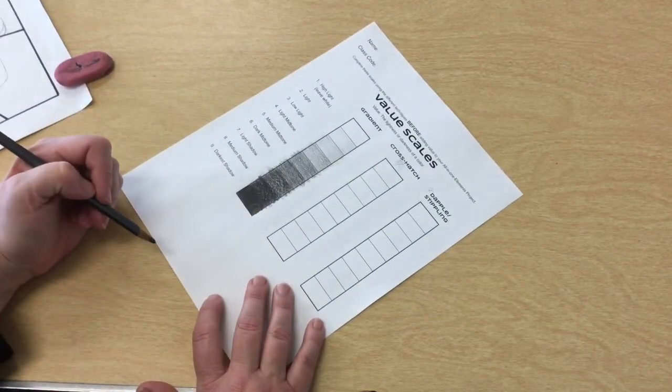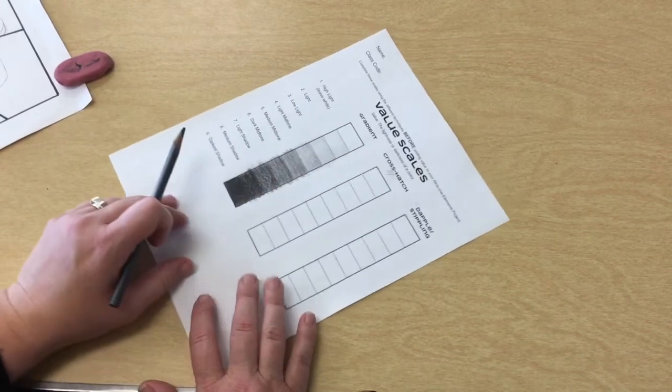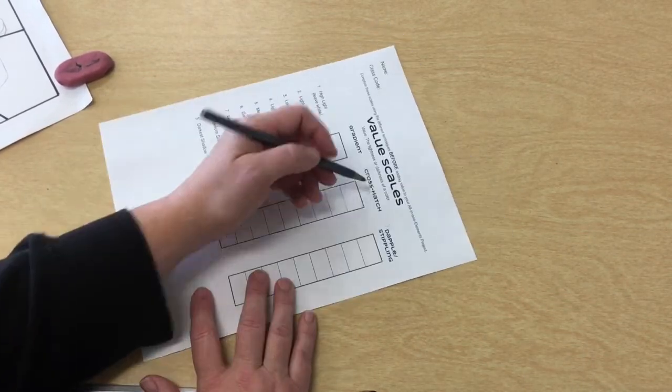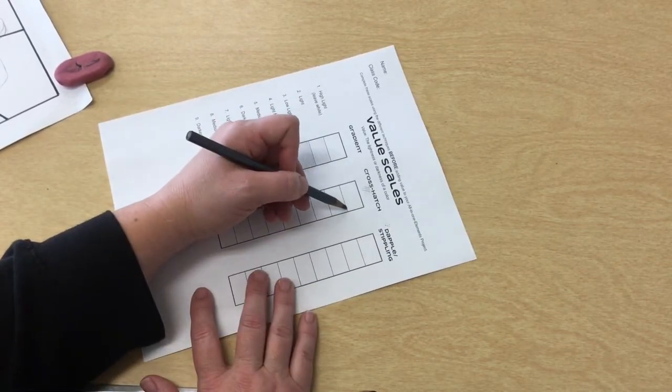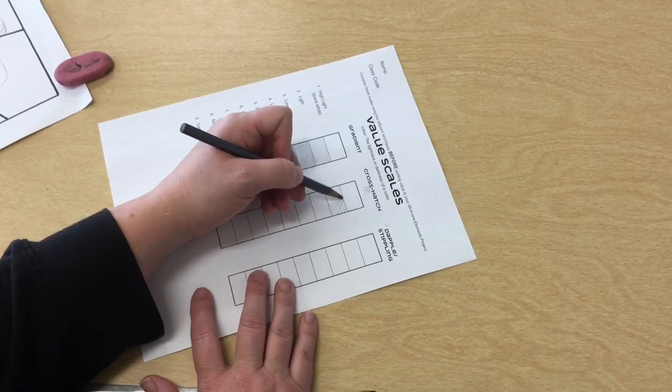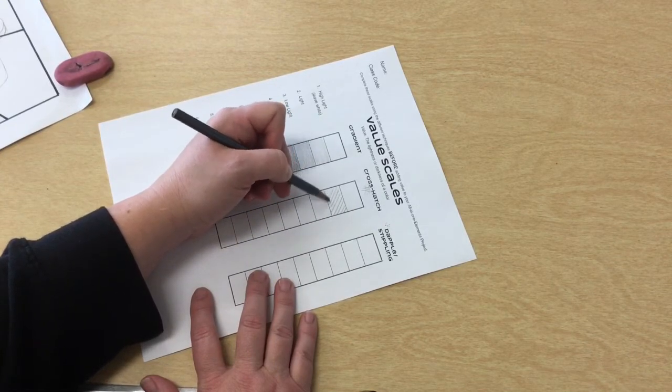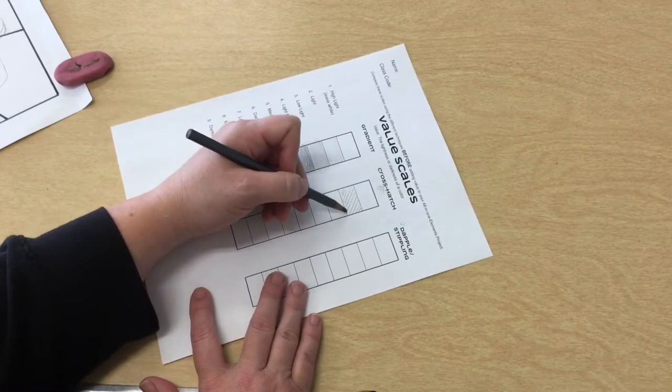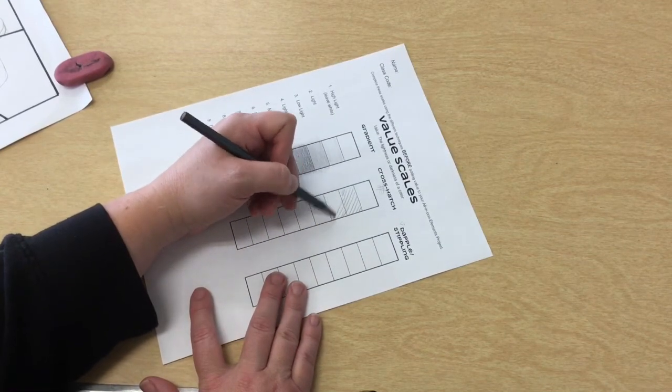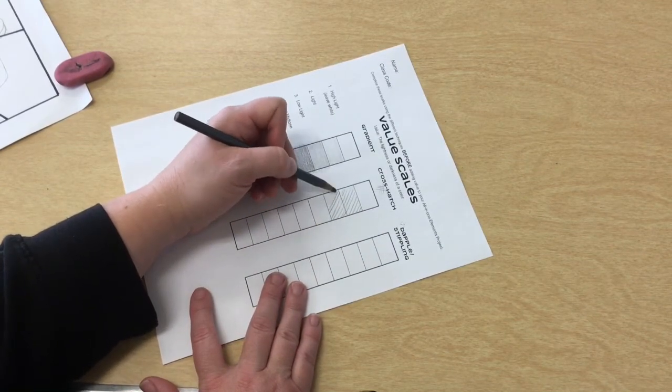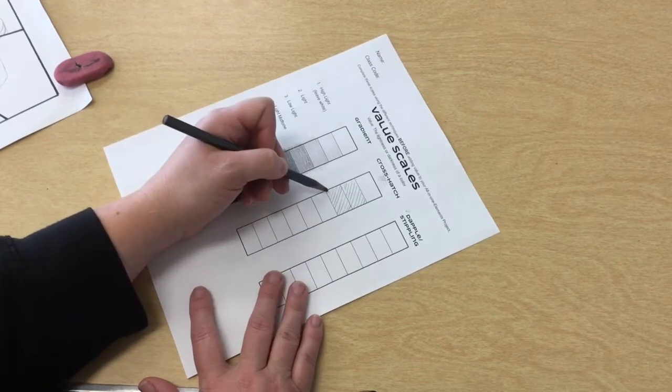So that's the gradient where you're trying to do it smoothly. A crosshatch is where you are doing lines. Essentially with a crosshatch in this layer you're going to do one layer of lines. Then I can repeat this here.